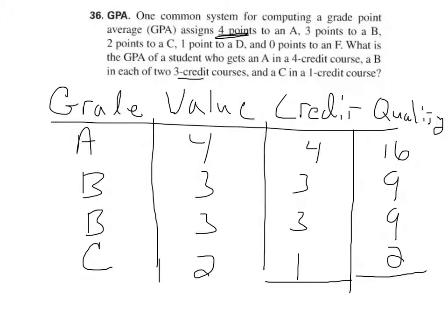If I add up these quality points, that's 25, 34, 36 quality points. And if we add up the credits, that's 4, 10, 11 credit hours, or not even a full-time student.